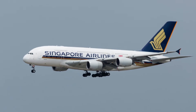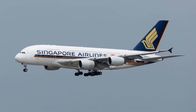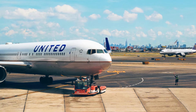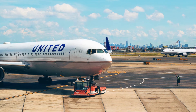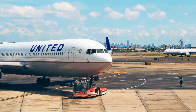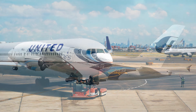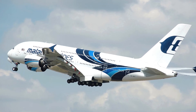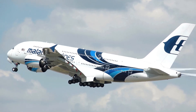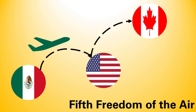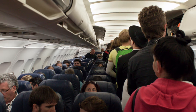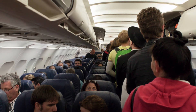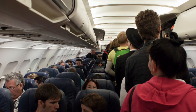With the fifth freedom it gets a little bit more complicated. This one is about multi-leg flights and allows an airline to transport passengers or cargo between two foreign countries, as long as the leg is part of a longer flight originating or ending at the country of origin for the airline. Going back to our example of the Mexican airline flying from Mexico to Toronto, now we will add a stop in Dallas. The fifth freedom ensures that passengers can get on the flight in Dallas and fly to Toronto, or the other way around. Passengers can board the flight in Toronto and get off in Dallas without any intention to go to Mexico City.